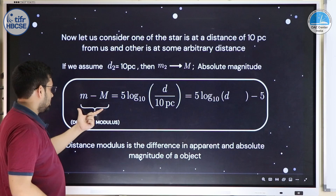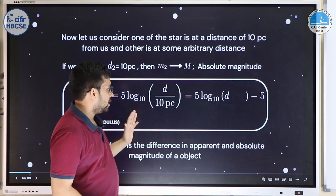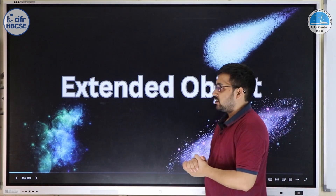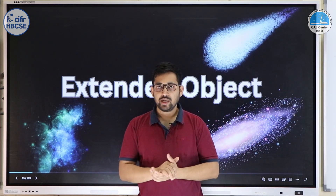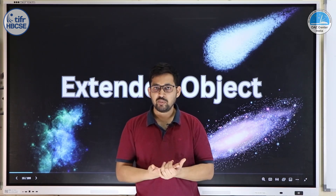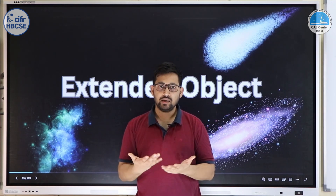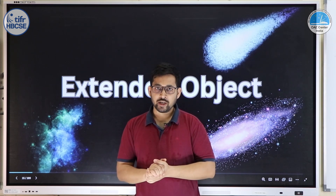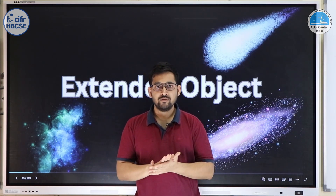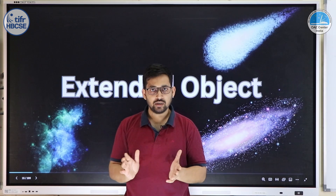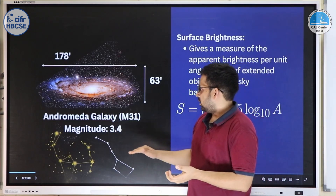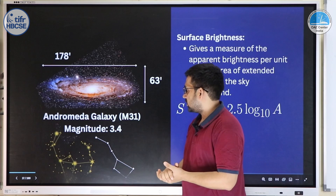The distance modulus is very useful: if you know any two of the three quantities (apparent magnitude, absolute magnitude, distance), the third is easy to calculate. So far we've discussed point-like stars, but some objects — galaxies, nebulae, the Sun, planets — are extended. For these, we consider the total flux from the entire surface area of the source when defining magnitude.